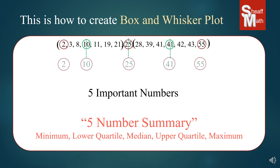Those are the five numbers. So here are your five important numbers and their names: the minimum is 2, the lower quartile is 10, the median is 25, the upper quartile is 41, and the maximum is 55.